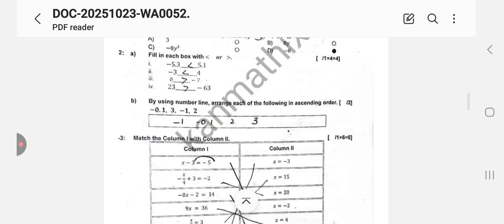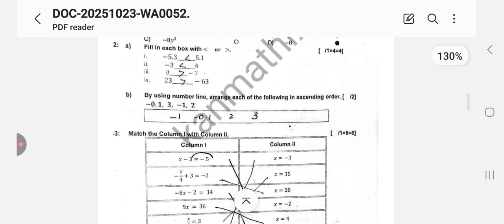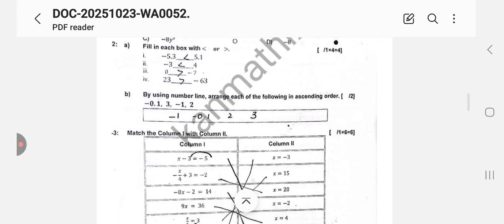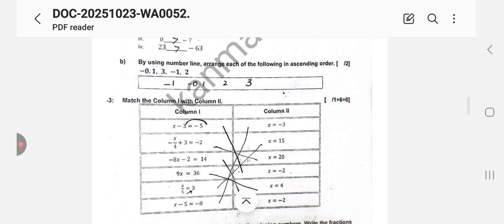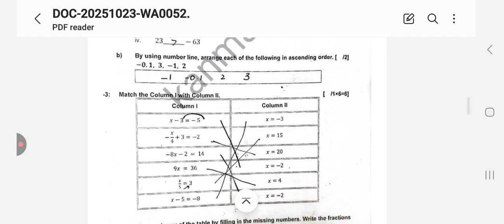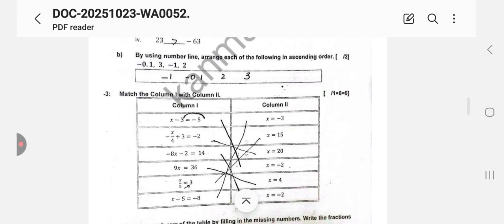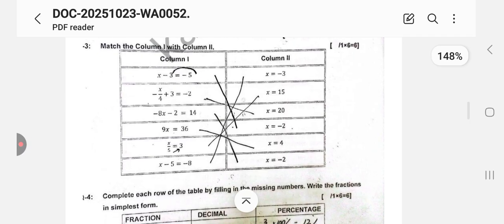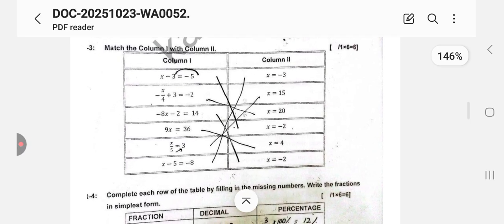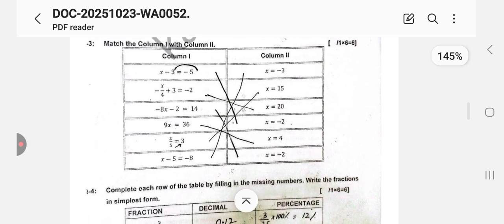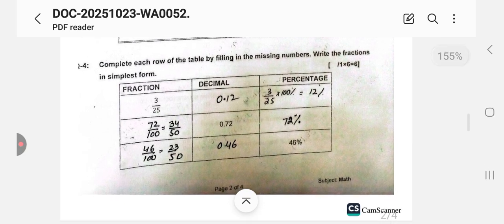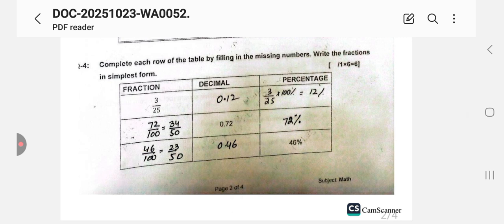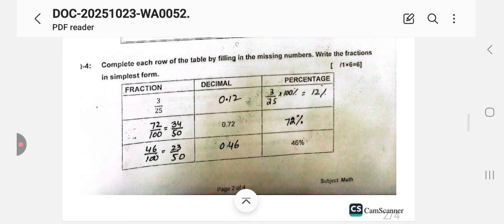Very simple question, you have to use the less than or greater than sign. Negative number is always less than positive number. So you can see here: first less than, second less than, third greater than, fourth greater than. Part B: Using number line, arrange each of the following in ascending order. You have to arrange in ascending order: minus 1, minus 0.1, 2, and 3. Next you have to match the columns. Hopefully you can check out the correct answers, you can take screenshot.